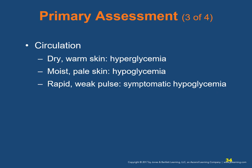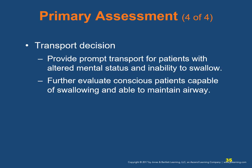Assess the patient's circulatory status. Warm, dry skin usually indicates hyperglycemia; moist, pale skin usually indicates hypoglycemia. A rapid, weak pulse is symptomatic of hypoglycemia. Make a transport decision: patients with altered mental status and impaired ability to swallow should be transported promptly. Patients conscious enough to maintain their own airway may be further evaluated on scene.